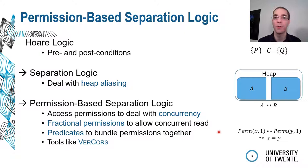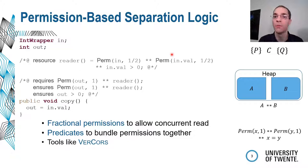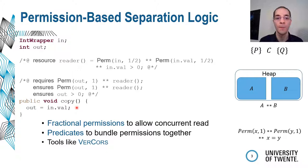There are different tools using permission-based separation logic; we will focus on the Vercore tool. Here is a more complex example: we have an object which wraps an int, and a predicate 'reader' bundles together the permissions for that object and for the wrapped value — both set to one-half, so two threads can concurrently read. When we want to use it, for example writing it to an integer variable, we need the predicate as a precondition, and as a postcondition we ensure that we still have those permissions afterwards.